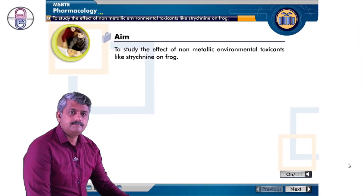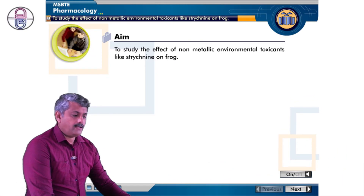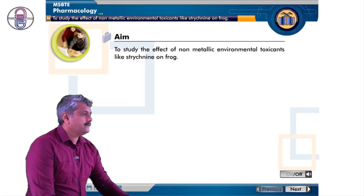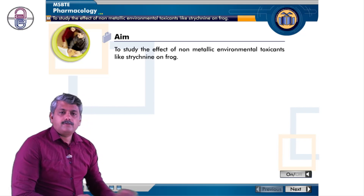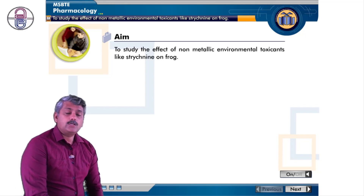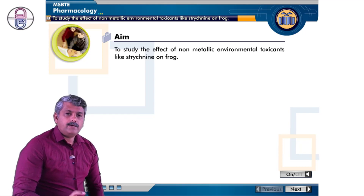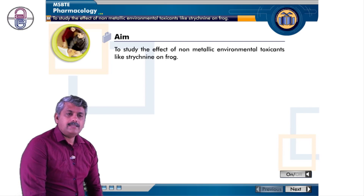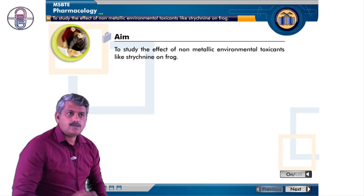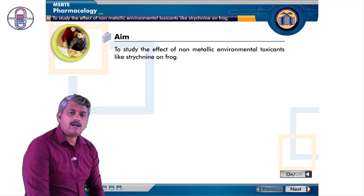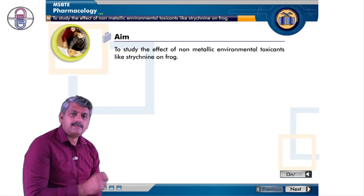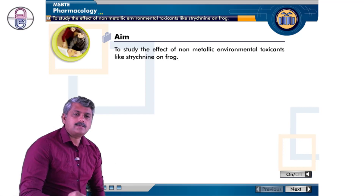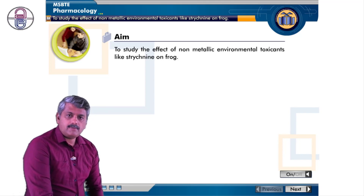Let's start with today's experiment. The aim is to study the effect of non-metallic environmental toxicants like strychnine on a frog. We are going to see what effect some non-metallic poisons have on our body, how they produce undesirable toxic effects. To investigate this, we select strychnine, which is one of the non-metallic poisons.